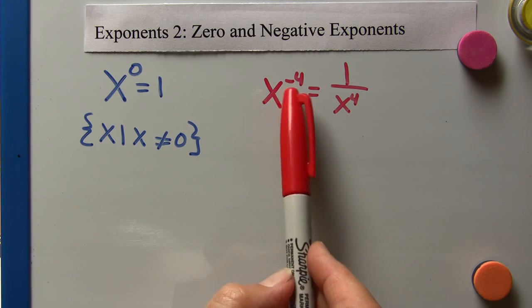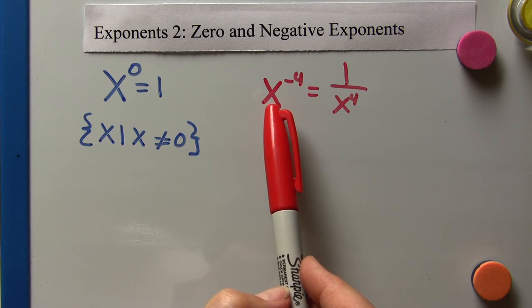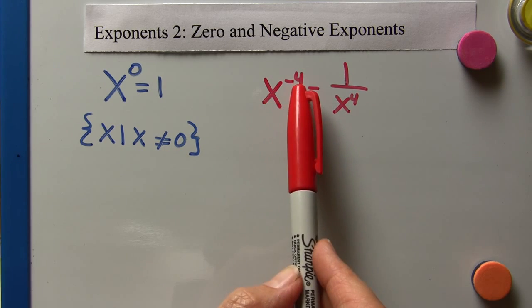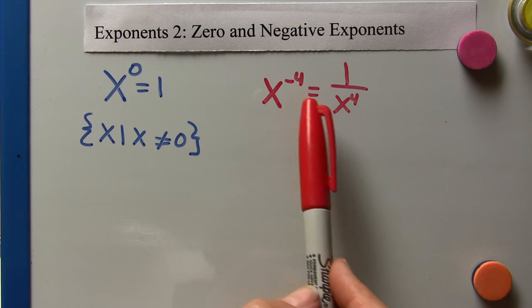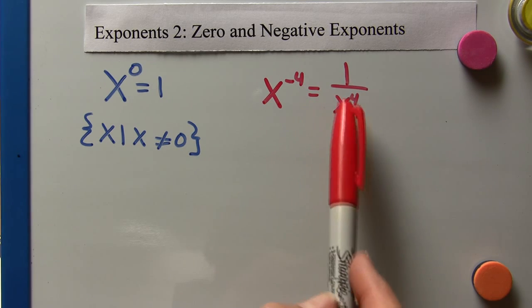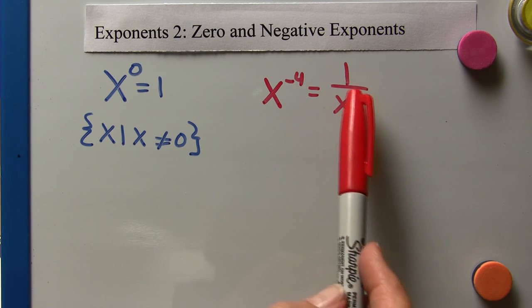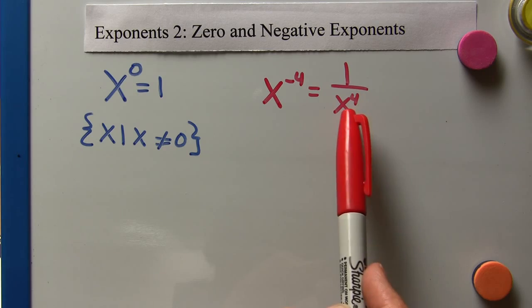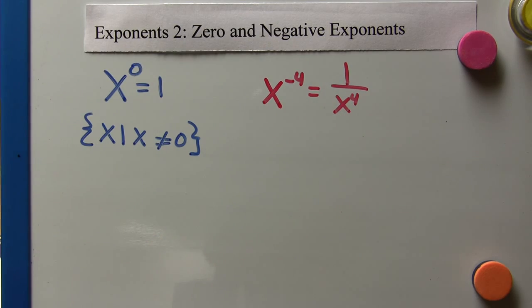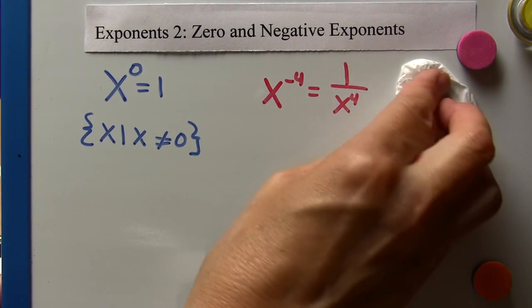For the negative exponents, let's say we have x to the negative four — this means that we just put it as one over x to the fourth. We'll certainly talk more about both of these.